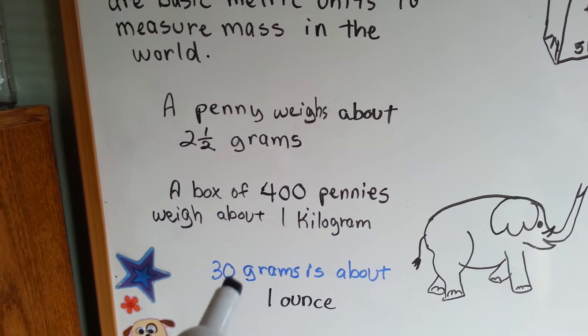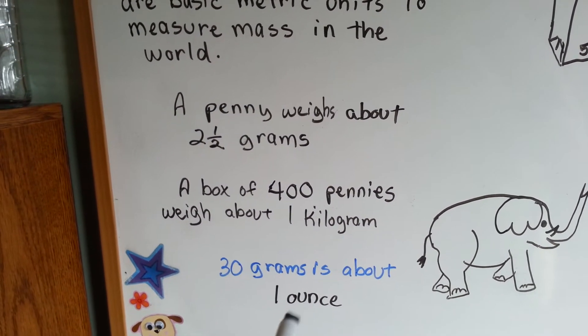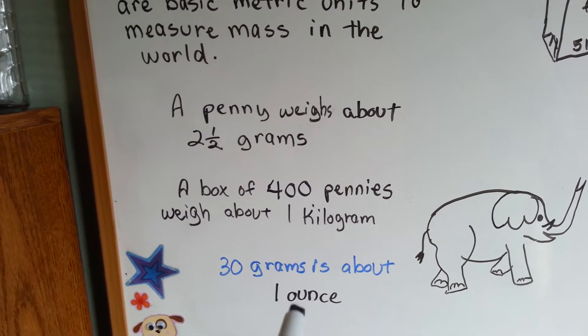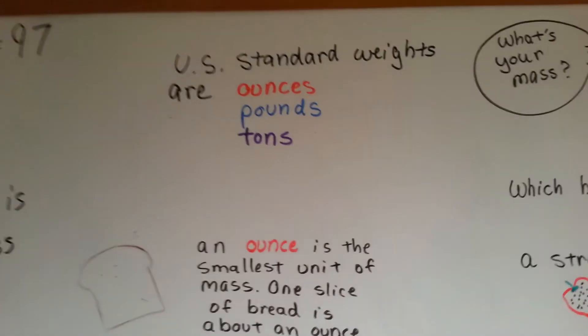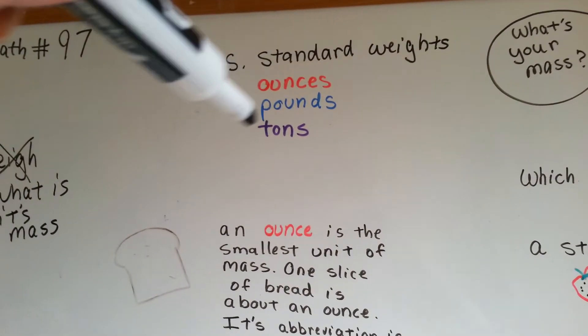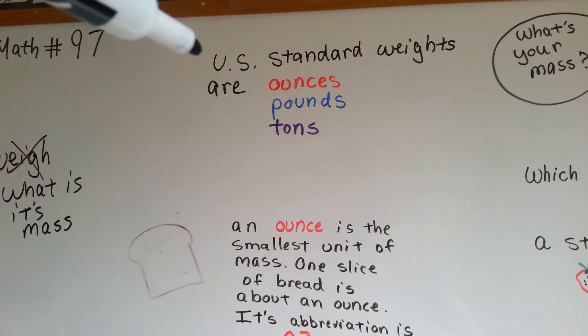There's about 30 grams in an ounce, and ounces are what we use here in the United States. So 30 grams is about an ounce. So we use ounces, pounds, and tons in the U.S.